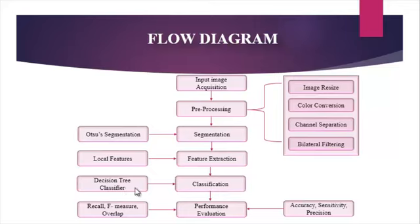The decision tree builds a classification or regression model in the form of a tree structure. It breaks down a dataset into smaller and smaller subsets while an associated decision tree is incrementally developed. The final result is a tree with decision nodes and leaf nodes. Finally, performance evaluation of the proposed system is done using performance measures such as accuracy, sensitivity, precision, and recall values.